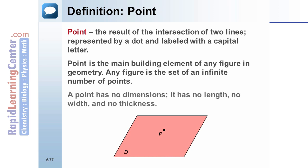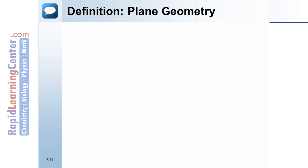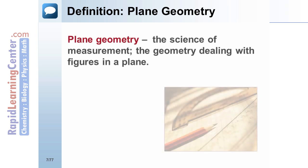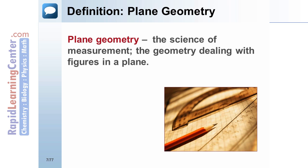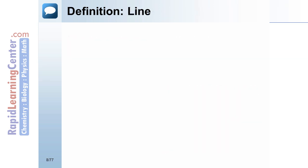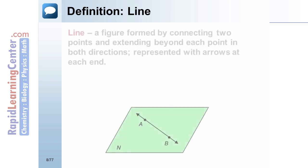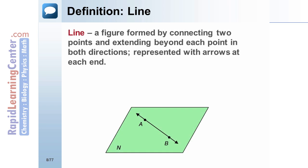A point has no dimensions — it has no length, no width, and no thickness. Definition: Plane Geometry. Plane geometry is the science of measurement. It is the geometry dealing with figures in a plane.